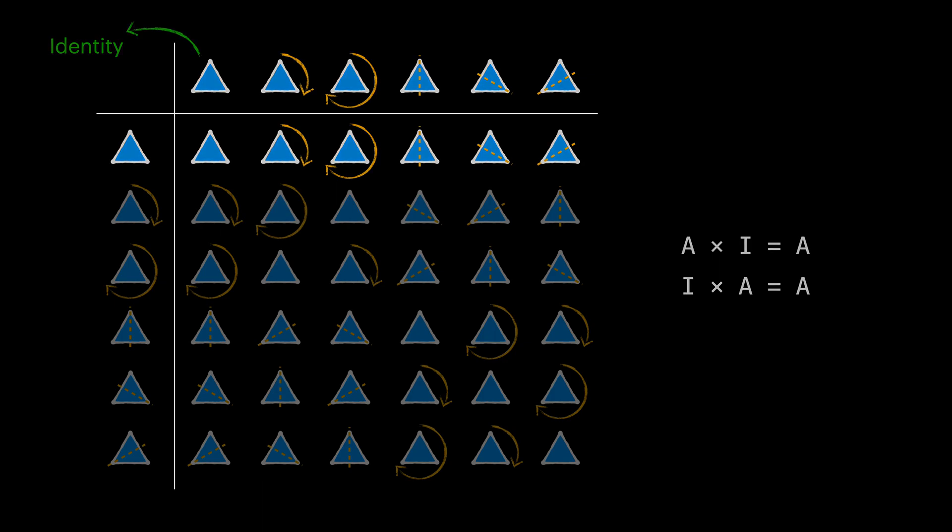To see if our triangle actions and their compositions form a group, let's consider the 120 degrees rotation. If this is a group, then we should have another action that neutralizes the effect of applying 120 degrees rotation, or in other words, inverse it.